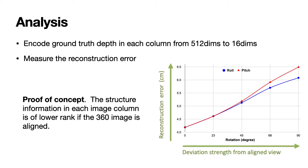We further conduct a proof-of-concept analysis. We encode the ground-truth depth in each column from 512 dimensions into 16, and recover back to measure the reconstruction error. The results show that the more deviation from the aligned view, the more reconstruction error there is. This shows that the structural information in each image column is of lower rank when the 360 image is aligned.